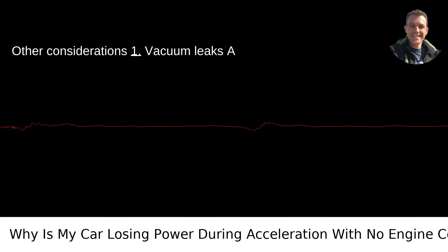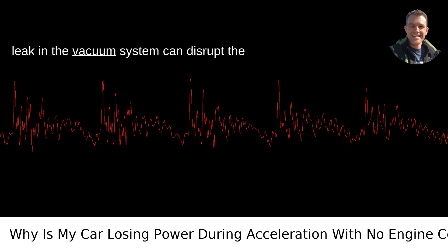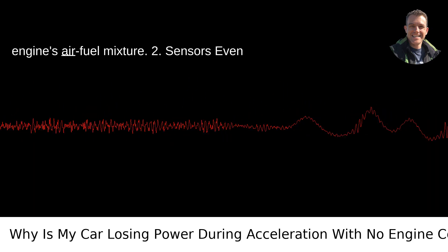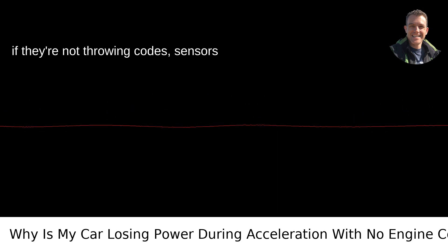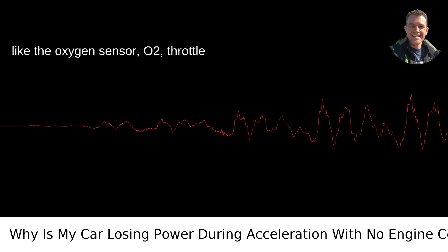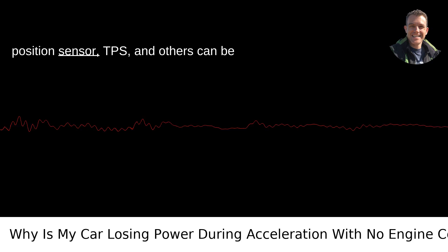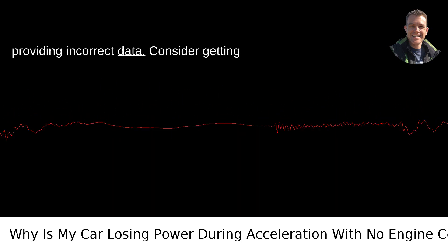Other considerations: 1. Vacuum leaks. A leak in the vacuum system can disrupt the engine's air-fuel mixture. 2. Sensors. Even if they're not throwing codes, sensors like the oxygen sensor (O2), throttle position sensor (TPS), and others can be providing incorrect data.